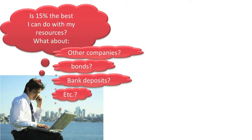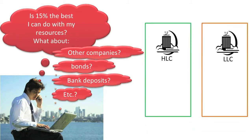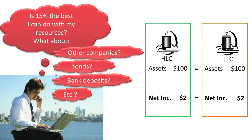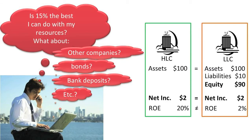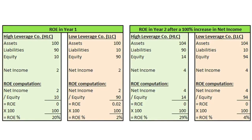When comparing ROEs between companies, investors should be aware that even though two companies might have identical amounts of net income and assets, they could have totally different ROEs. In this situation, the difference in their ROEs would be caused by how their assets were financed. If most of their assets were financed by common shareholders, their ROE will be lower than if most of their assets were funded by debt — i.e., leverage. The example below provides key numbers for two almost identical companies.